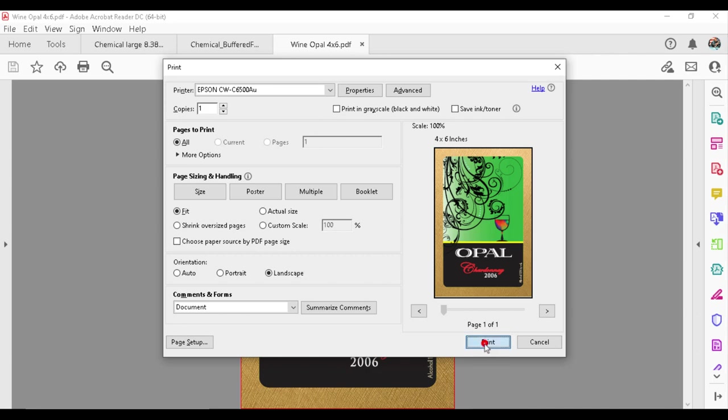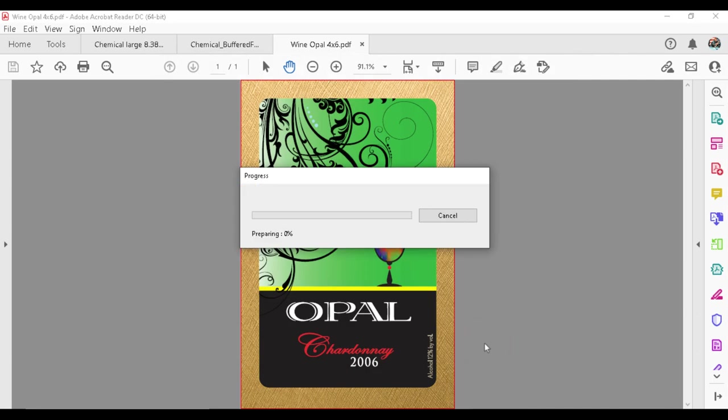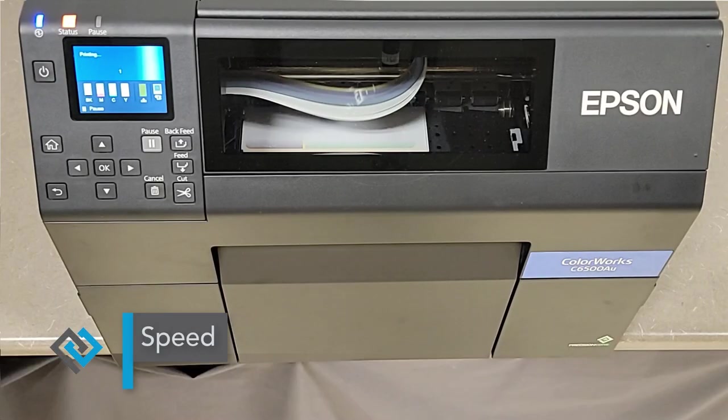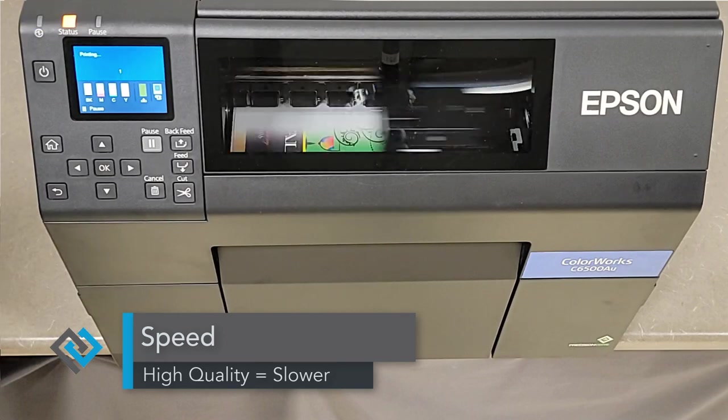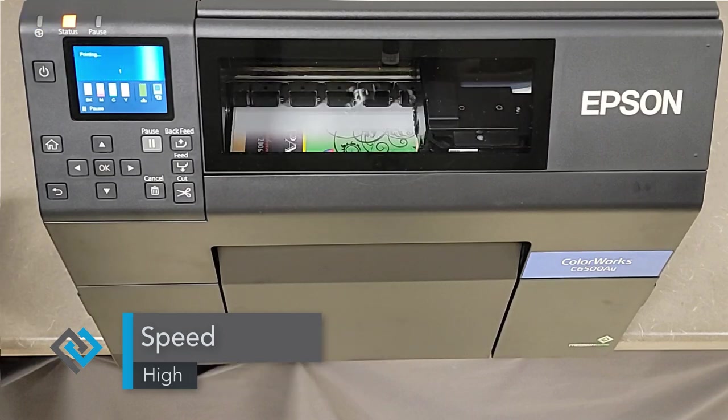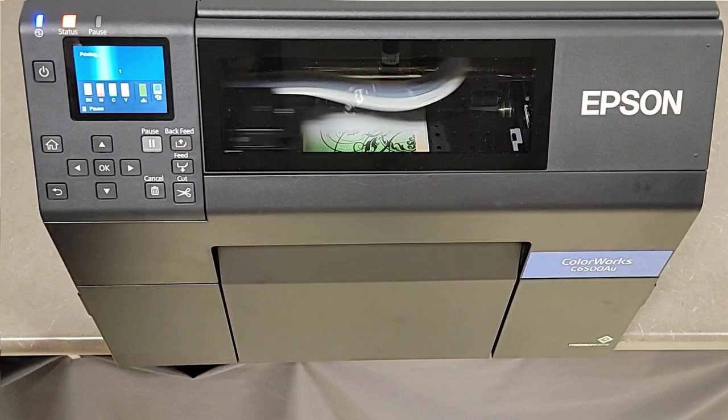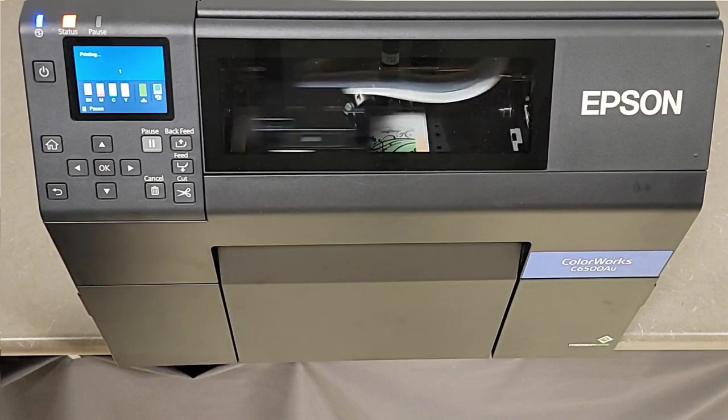As I mentioned, I have the high quality set. So the speed of this label could be faster if I chose a different setting, but I wanted high quality. So it's slower speed. And as I'll show you here in a moment, these are die cut labels, as I mentioned, and it's going to cut it, just cut one for this example.